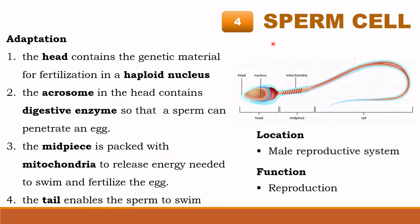Sperm cell adaptation: in the sperm cell there are three sections — the head, midpiece, and tail. The head contains the acrosome and a haploid nucleus with 23 chromosomes. The acrosome contains digestive enzymes which are used to penetrate an egg. The midpiece region contains mitochondria to release energy needed for the sperm to swim and fertilize the egg.